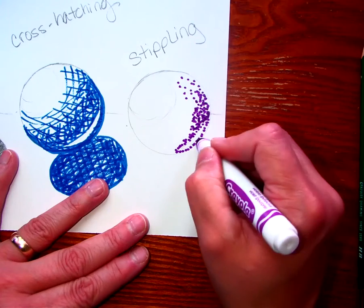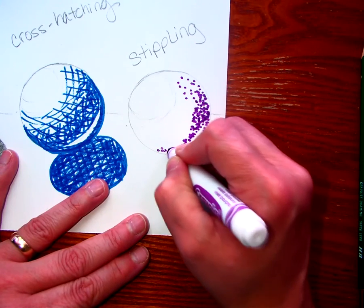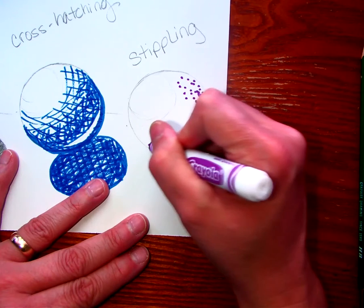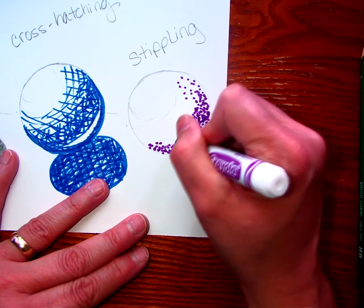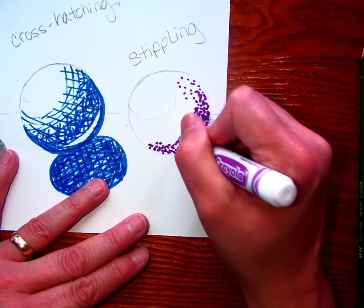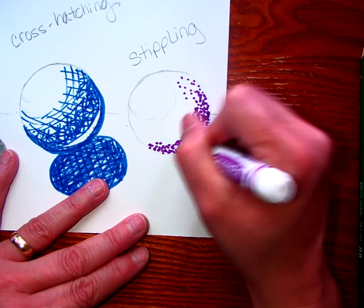And shading can be used with all kinds of different materials. You can do shading with pencils. You can do shading with charcoal. You can do shading with oil pastels or chalk pastels. Shading can be done with paint of different varieties.